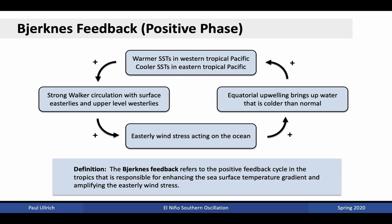Consequently, we obtain flow from east to west. The easterly wind stress then induces equatorial upwelling that brings up water that is colder than normal. This upwelling is again dominant in the eastern Pacific, leading to colder sea surface temperatures in the east. Consequently, this reinforces the cycle, producing warmer sea surface temperatures in the west and cooler sea surface temperatures in the east. Bjerknes feedback refers to this positive feedback cycle. In the tropics, it's responsible for enhancing the sea surface temperature gradient between the western and eastern Pacific, as well as amplifying the easterly wind stress.